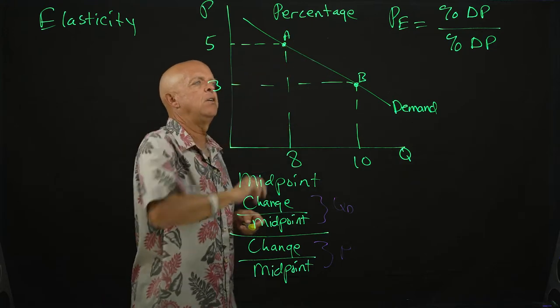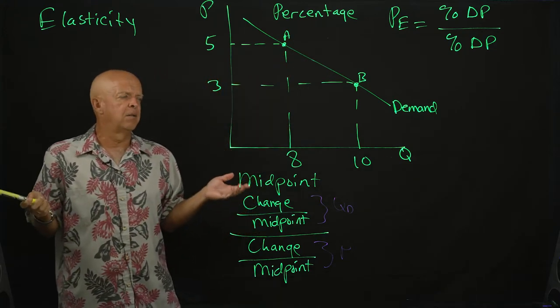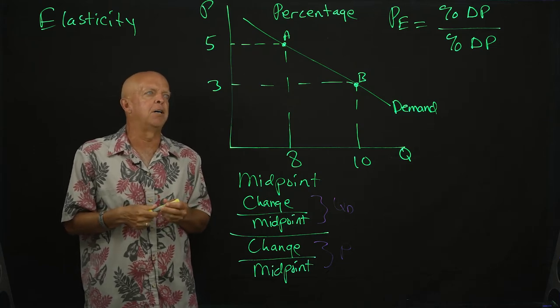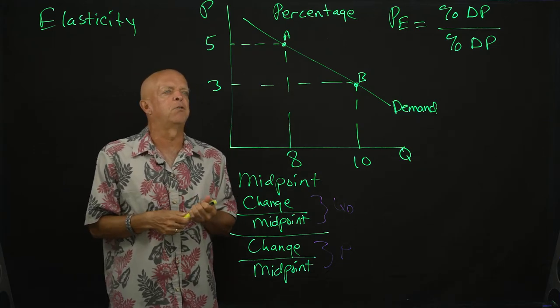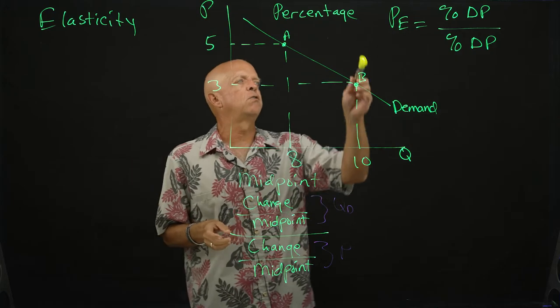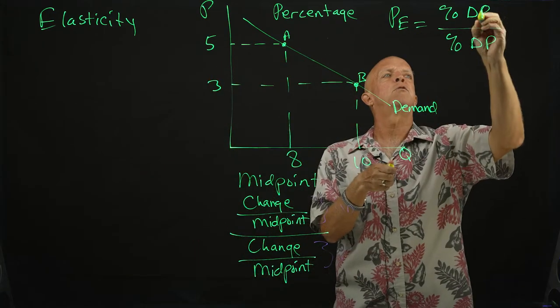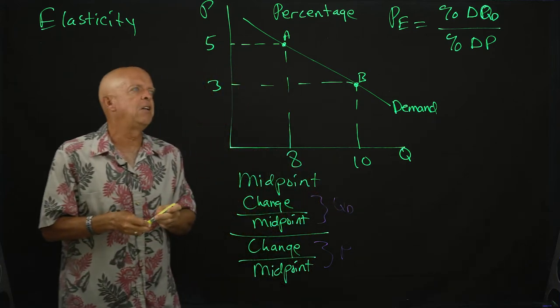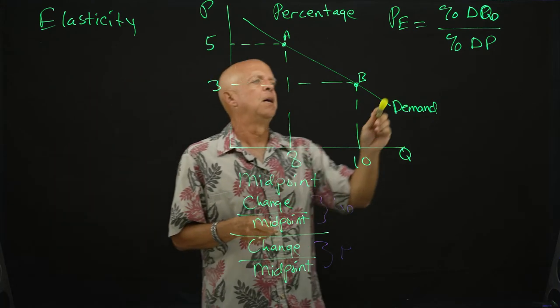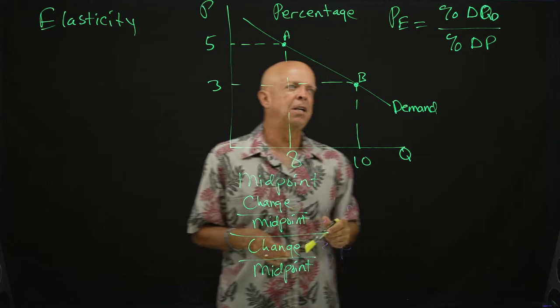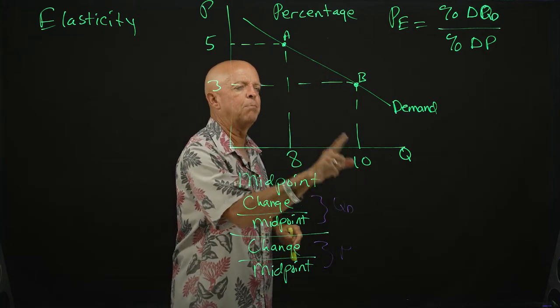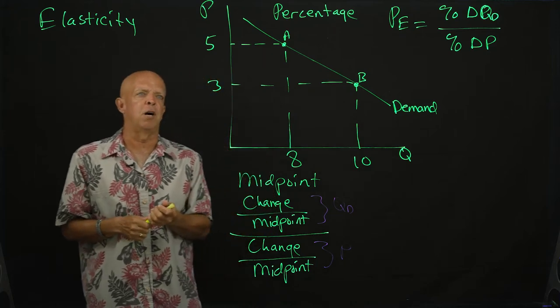This first method is called percentage, and it's really the theoretical or behavioral impact of consumer responsiveness to a change in price. So here's the general formula: percentage change in quantity demanded over the percentage change in price. Now to calculate the percentage, it's always going to be the change over the base from where you're starting from.